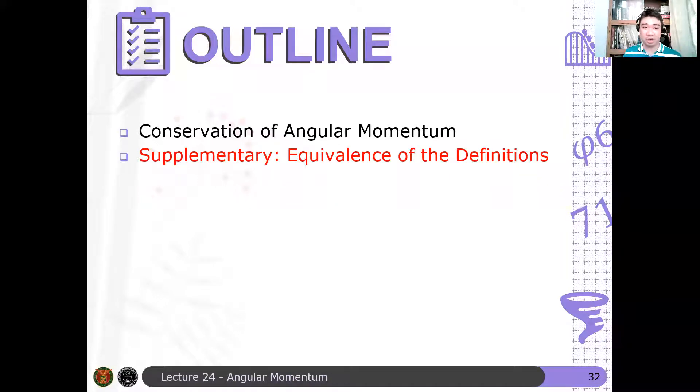So as I said in the discussion, there is an equivalence. There is a way to prove that the R cross P definition and the I omega definition of angular momentum, they're both equivalent. These are two equivalent definitions. Now, the question is how do we show this. I've shown you earlier a heuristic way to think of that, but it's not a formal proof because there's a way to disprove that statement.